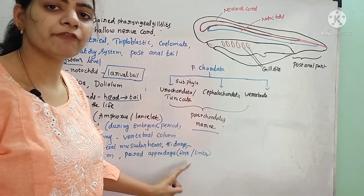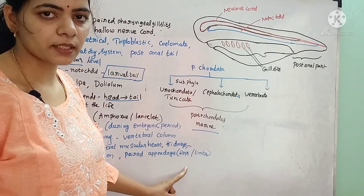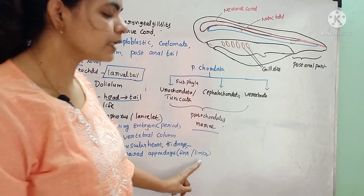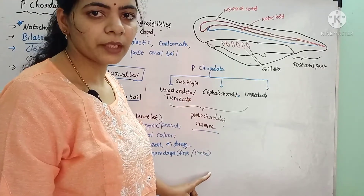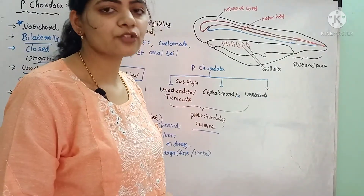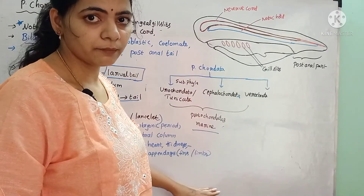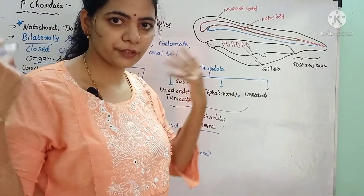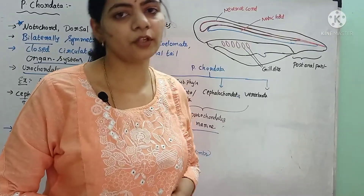These appendages may be fins — in aquatic forms they are fins, and in terrestrial forms they are limbs. In fishes, paired fins are present for swimming. In terrestrial animals like dogs, cats, human beings, and monkeys, they have limbs. The front two are called forelimbs and the back two are hindlimbs. In humans, these limbs are modified into hands and legs. These are the general characters of Phylum Chordata.